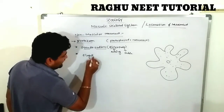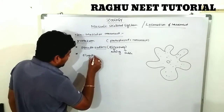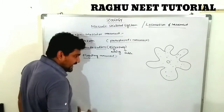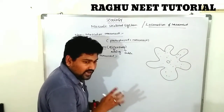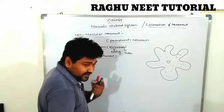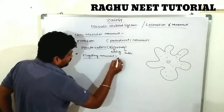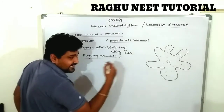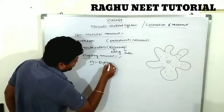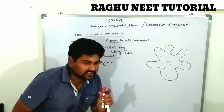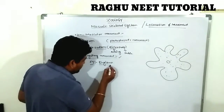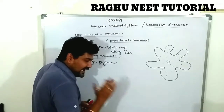Next is flagellary movement — not locomotion, flagellary movement. These organisms are absent of muscles but possess a long whip-like organ known as a flagellum, useful for movement and locomotion. Example: Euglena. The Euglena is interesting because it comes under both plant and animal kingdoms.